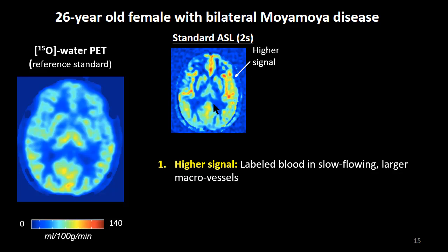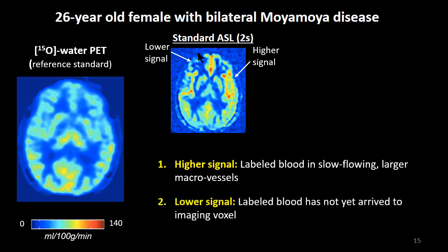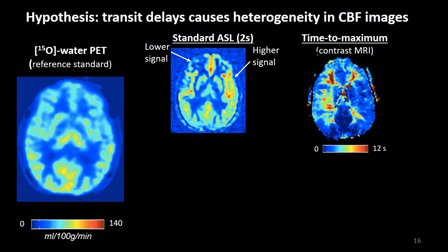This leads us to hypothesize ways in which the ASL mechanism creates inaccuracy. The higher signal on the left side might be labeled RF that has arrived at the imaging site still in slow-flowing large vessels. On the right hemisphere, even longer transit delays result in lower signal because the tagged spins haven't arrived yet. These hypotheses can be tested with a DSC image looking at time-to-maximum, which confirms delays on either hemisphere — more severe on the right.